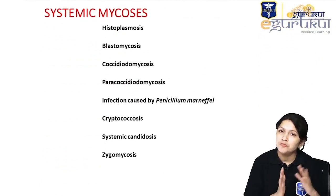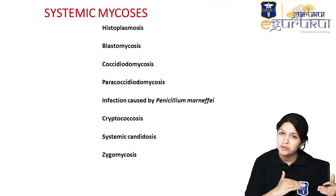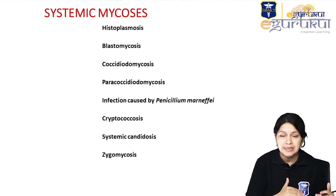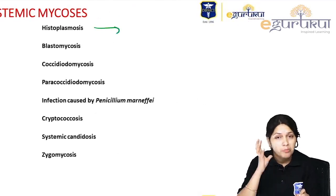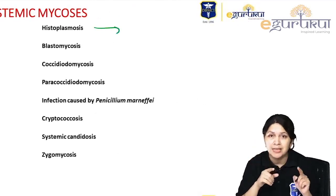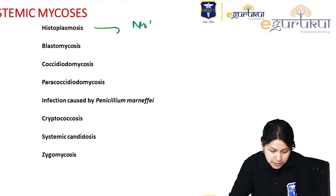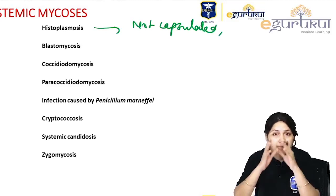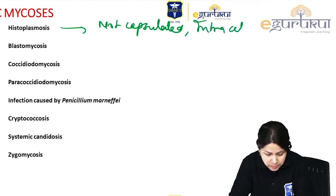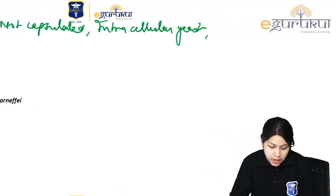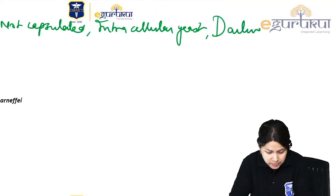The dimorphic fungi include Histoplasma, Blastomyces, Coccidioides, Paracoccidioides, Sporothrix schenckii, and Penicillium marneffei. For Histoplasma capsulatum — an important point: the name has 'capsulatum' but it is not capsulated. Here we see yeast in the cells of the reticuloendothelial system — intracellular yeast. The disease is classically known as Darling's disease.